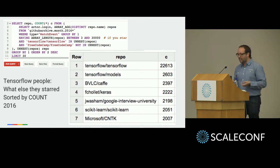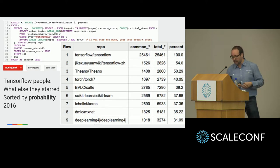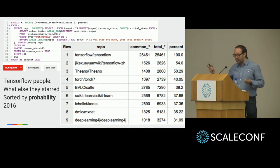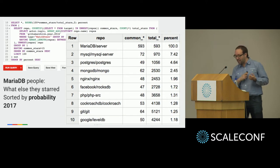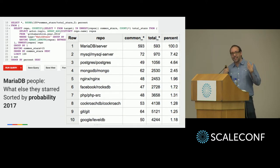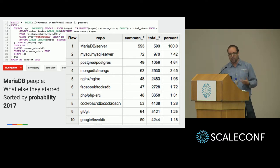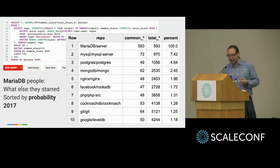This is a simple ranking — just counting the number of stars given to other projects. But you might want to normalize by how many stars those other projects got overall. If I change it to probability, these are the projects most related to TensorFlow: TensorFlow in Chinese, Theano, Torch, Caffe — the ranking changes. I also ran this query for Monty — whoever starred MariaDB also starred MySQL Server, Postgres, MongoDB, Nginx, RocksDB, PHP. It all makes sense.